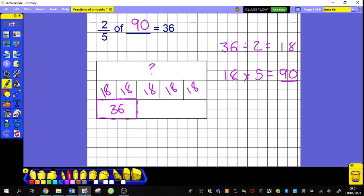Now, to check I'm correct, I could do my calculation as I normally would like yesterday. Two-fifths of ninety. I can do ninety divided by five gives me eighteen. Eighteen times two gives me thirty-six. So I know I must be correct.